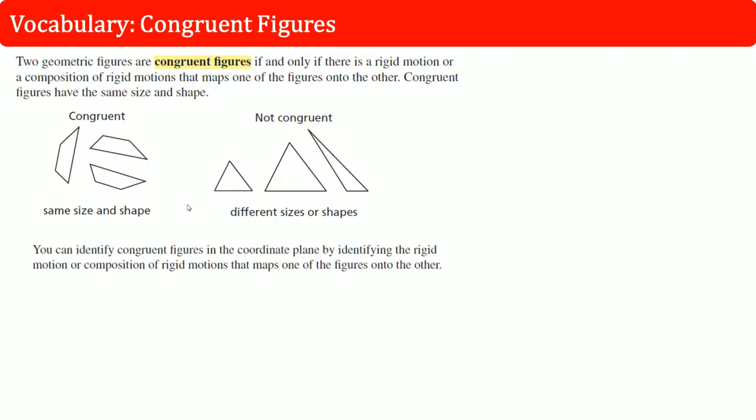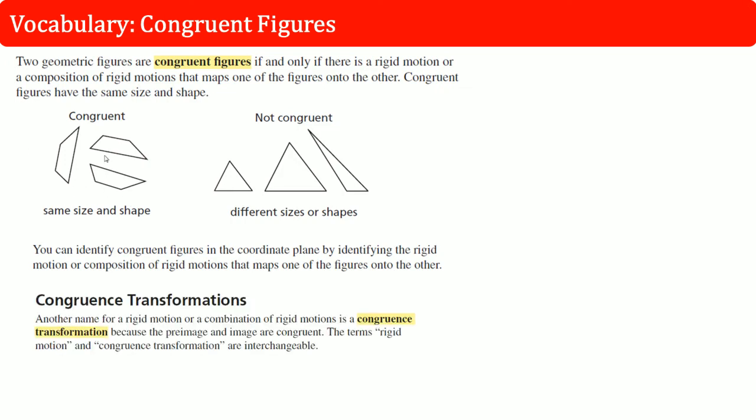If the images are congruent, then their parts are congruent. That means that congruent transformations is when the pre-image and the image, the image before and the image after are the same and they're interchangeable.